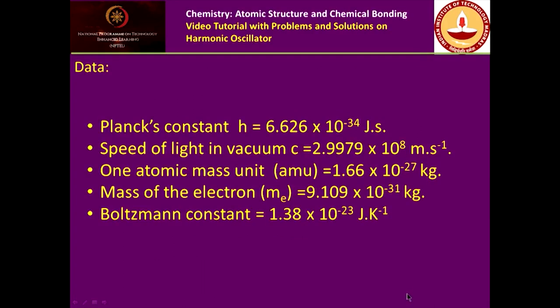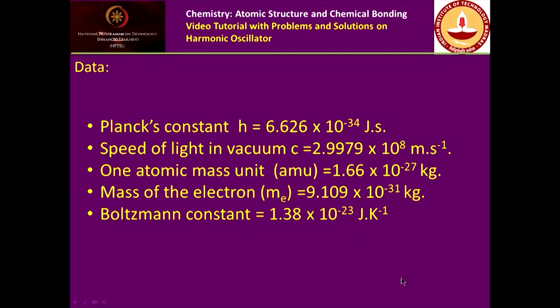Some of the constants that I would like the students in chemistry and physics to have in memory — these are fundamental constants and it is important to have them in memory. The Planck's constant, for example, is 6.626 times 10 to the minus 34 joule second. The other constants given here include the speed of light in vacuum, the atomic mass unit, the mass of the electron, and the Boltzmann constant. These are constants which would be used throughout this exercise.